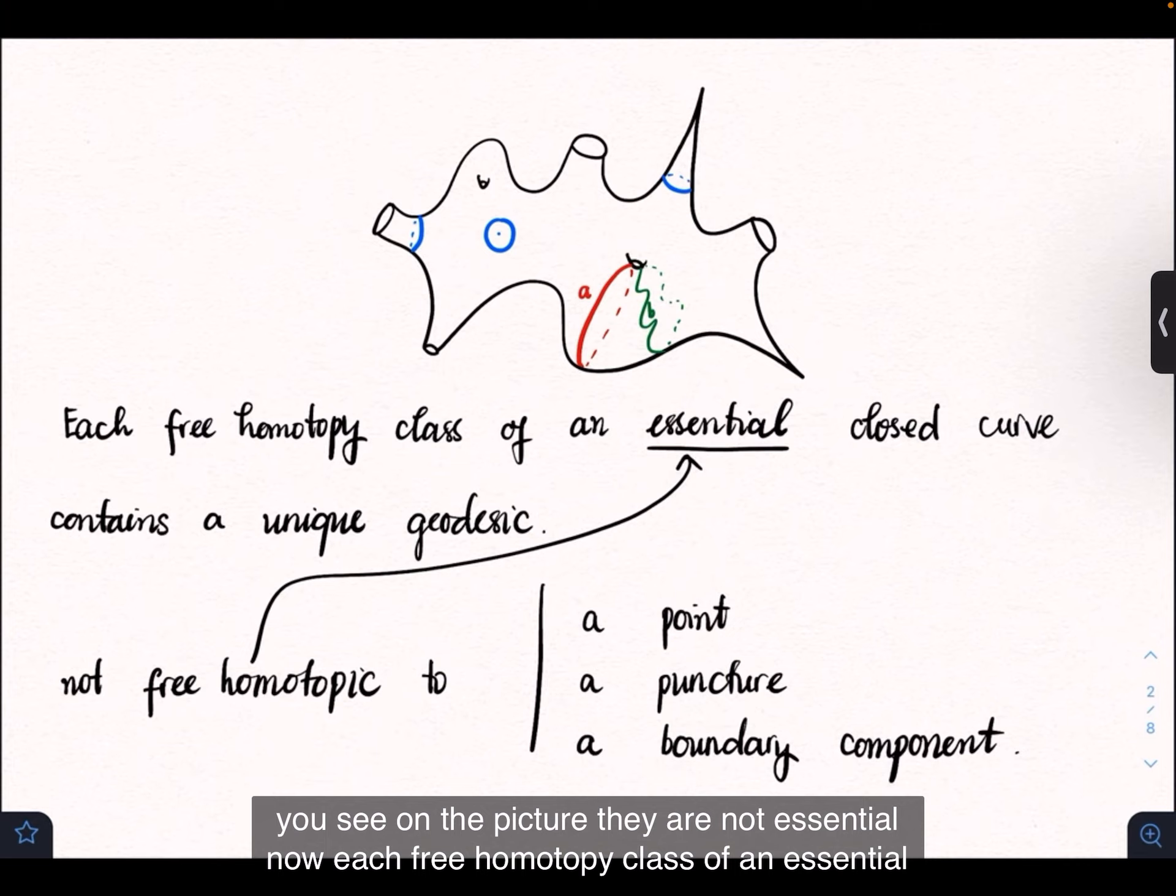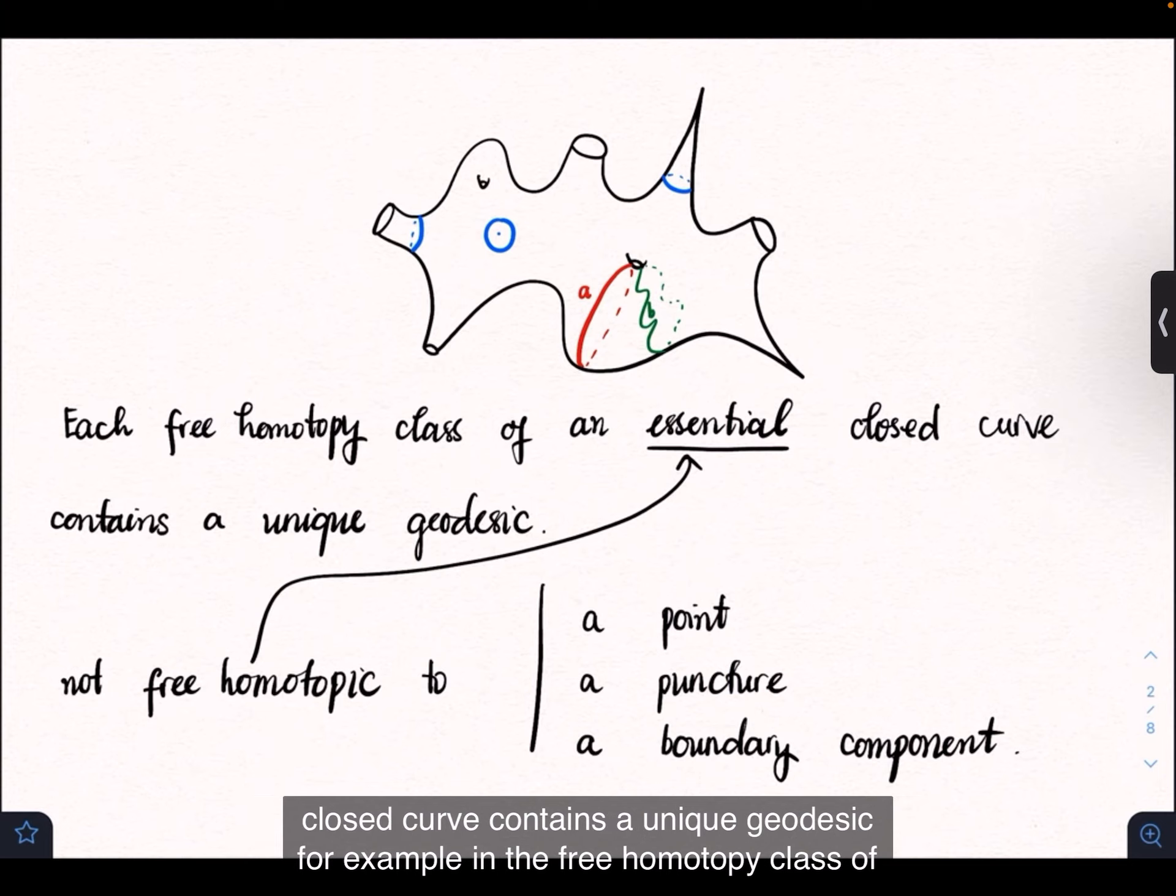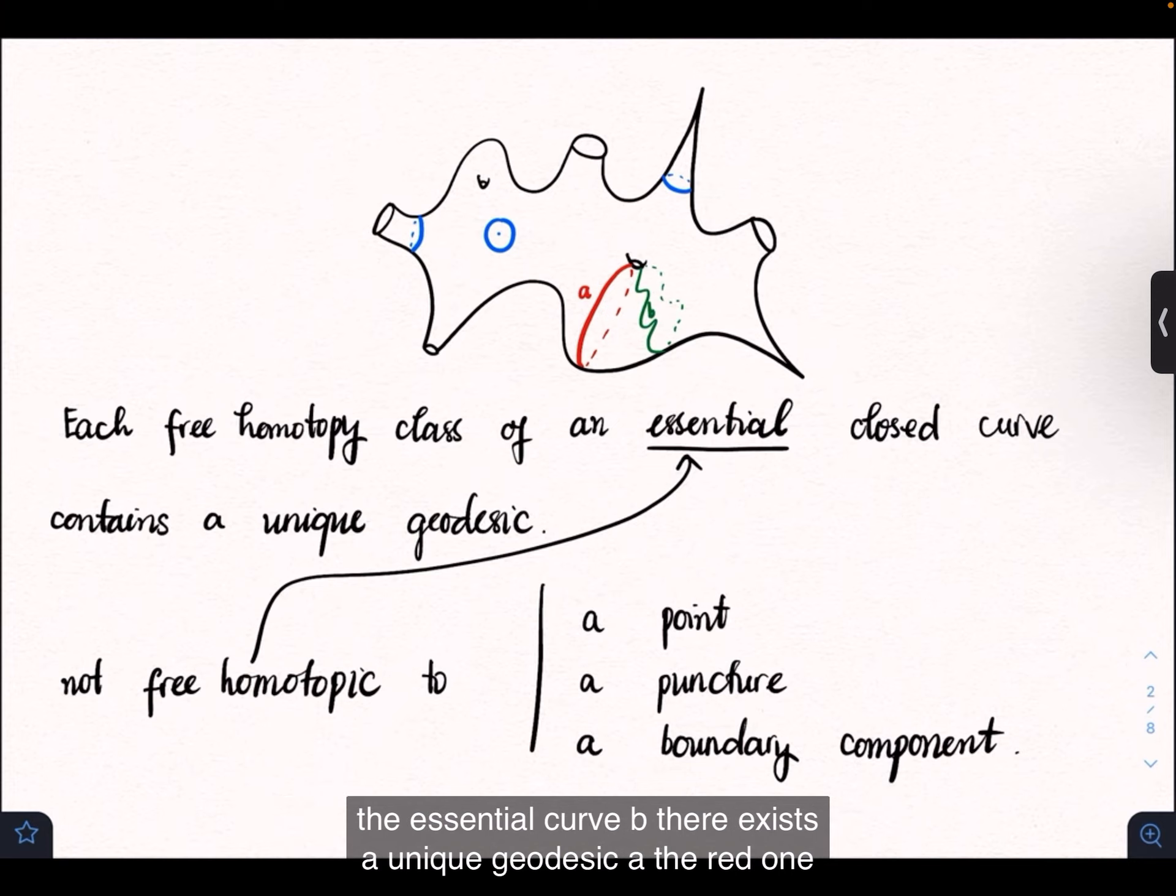Each free-homotopic class of an essential closed curve contains a unique geodesic. For example, in the free-homotopic class of the essential curve B, there exists a unique geodesic A, the red one.